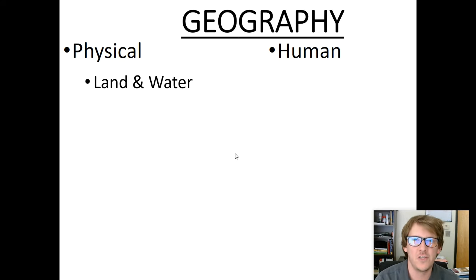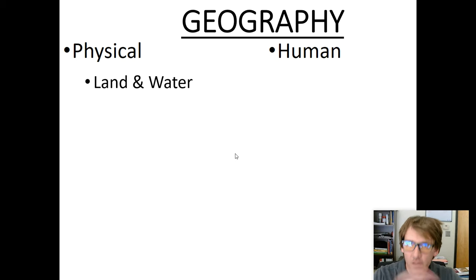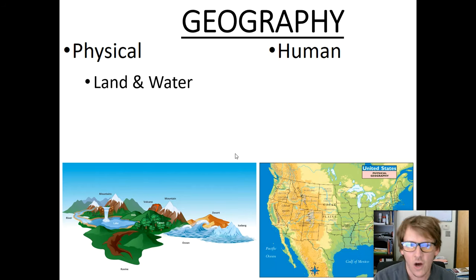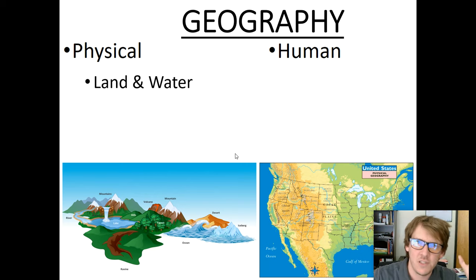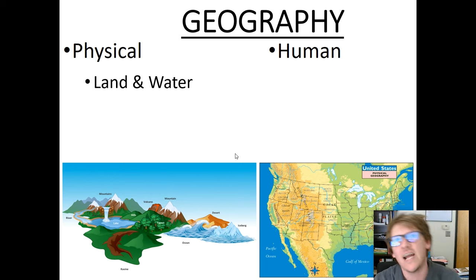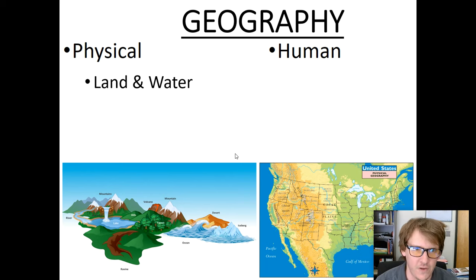If you really want to understand physical geography, just think of there's no humans — just think of the earth, the forest, the nature, land and water, mountains, rivers, seas, deserts, oceans, Antarctica, ice caps, underwater deep in the sea. We're thinking of nature, animals, how they interact, dinosaurs. All those things are physical geography.